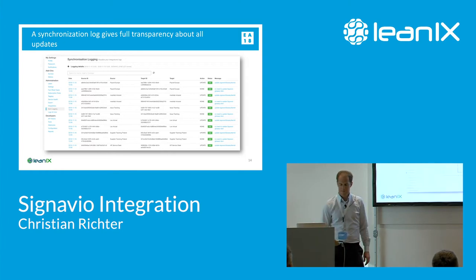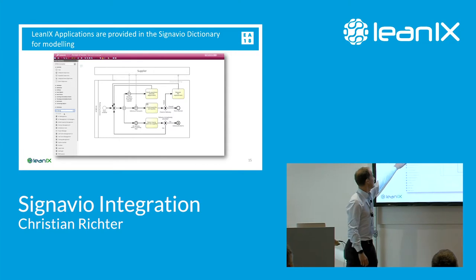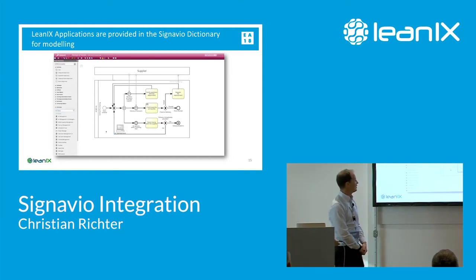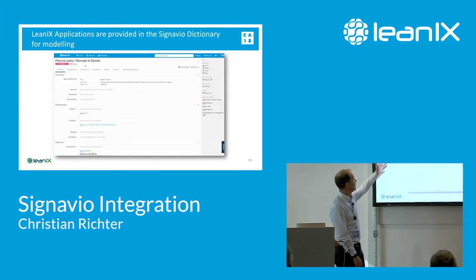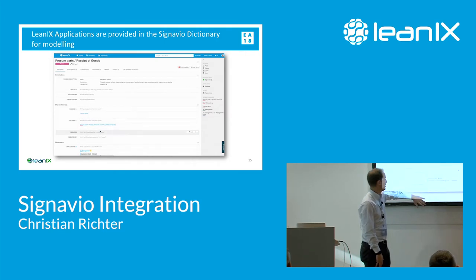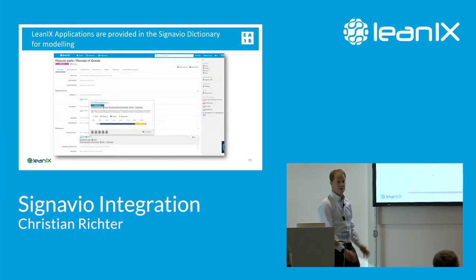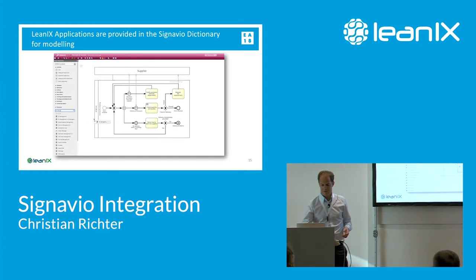In the user flow: in Signavio you have a process — for example 'Receipt of Goods' — you look in your dictionary, put an IT system into the process, and a simple placement into the process is enough to detect that it's used there. You then go into LeanIX, see 'Receipt of Goods' is a level-two process linked to an upper level 'Procure Parts', and see the application is automatically related to that process without any manual intervention.